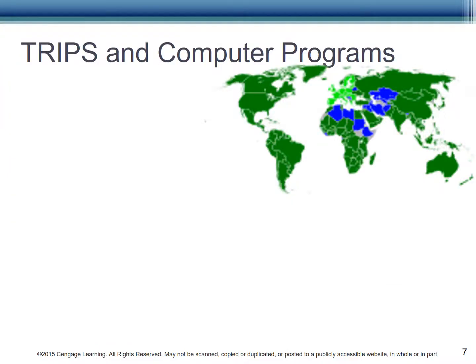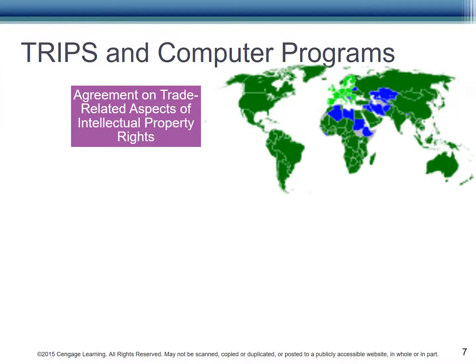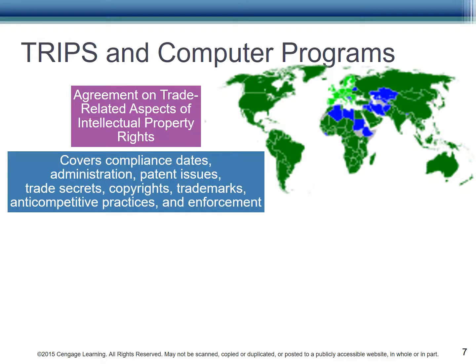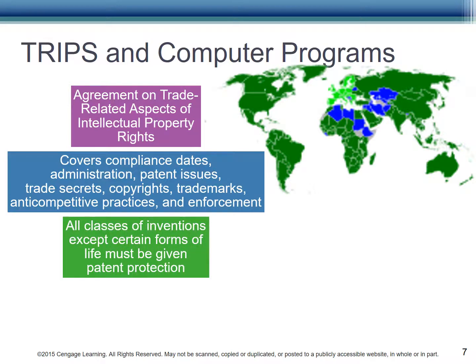TRIPS is a multinational agreement on trade-related aspects of IP rights. It covers compliance states, administration, patent issues, trade secrets, copyrights, trademarks, anti-competitive practices, and enforcement. TRIPS states that all classes of inventions, except certain forms of life, must be given patent protection. However, it doesn't specifically address software-related inventions.